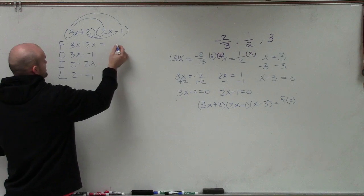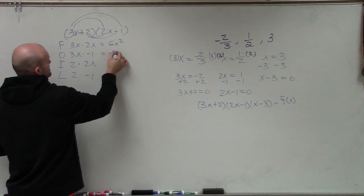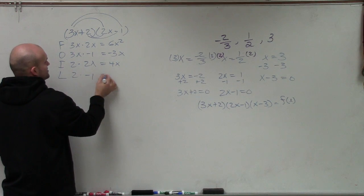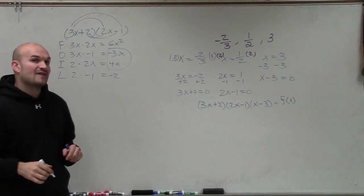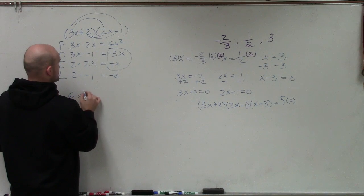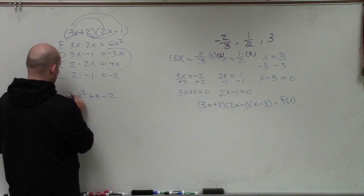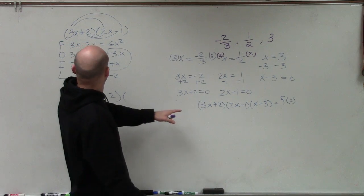So when I multiply these, 3x times 2x is 6x squared. 3x times negative 1 is a negative 3x. 2 times 2x equals 4x. And 2 times negative 1 equals negative 2. I notice that these both have a variable factor of x, so therefore I can combine them. So now I have 6x squared plus x minus 2